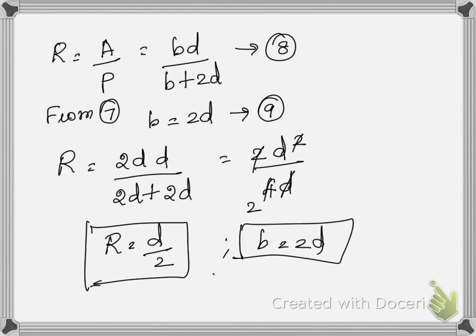So the conditions are: B equals 2D and R equals D over 2. When the rectangular channel is most economical, the width should be equal to 2 times the depth of flow, or the hydraulic radius should be half the depth of flow. If these conditions are satisfied, the rectangular channel will be the most economical channel. Thank you and happy learning.